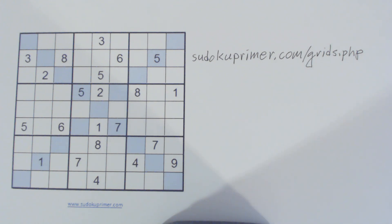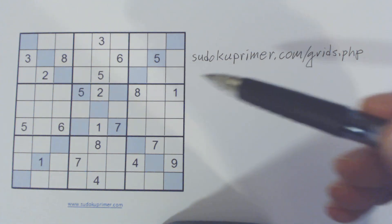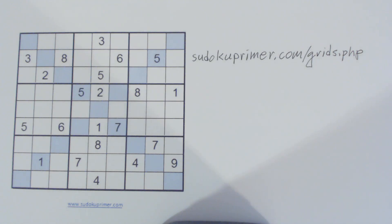You can get that at sudokupermer.com/grids.php. You can get two different Excel spreadsheets — one with the shaded diagonal and one without. There are also regular Sudoku puzzles available as images in different formats and PDF files that you can download and print. The advantage to the Excel spreadsheets is you can type in the givens before you print it, and then it looks nice and clean.